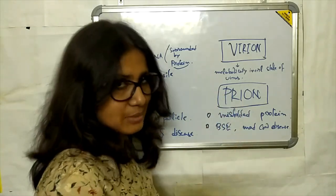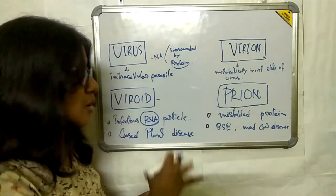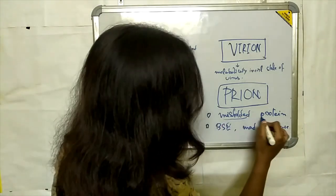Prions don't have any type of nucleic acid, no DNA, no RNA. They are some misfolded form of protein.